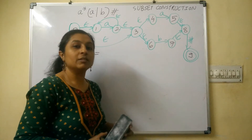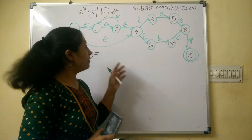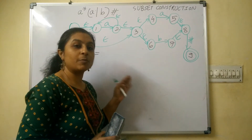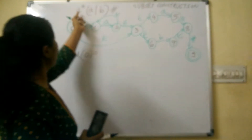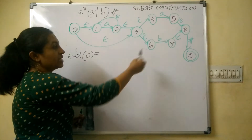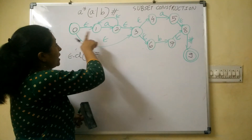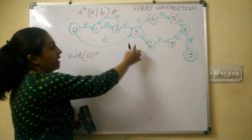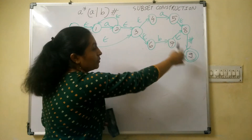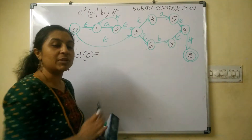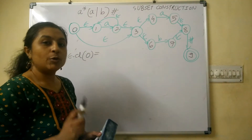Hello everyone. Let us see an example of the subset construction method for A* (A union B) hash. This is the equivalent NFA, and state 9 is an accepting state.